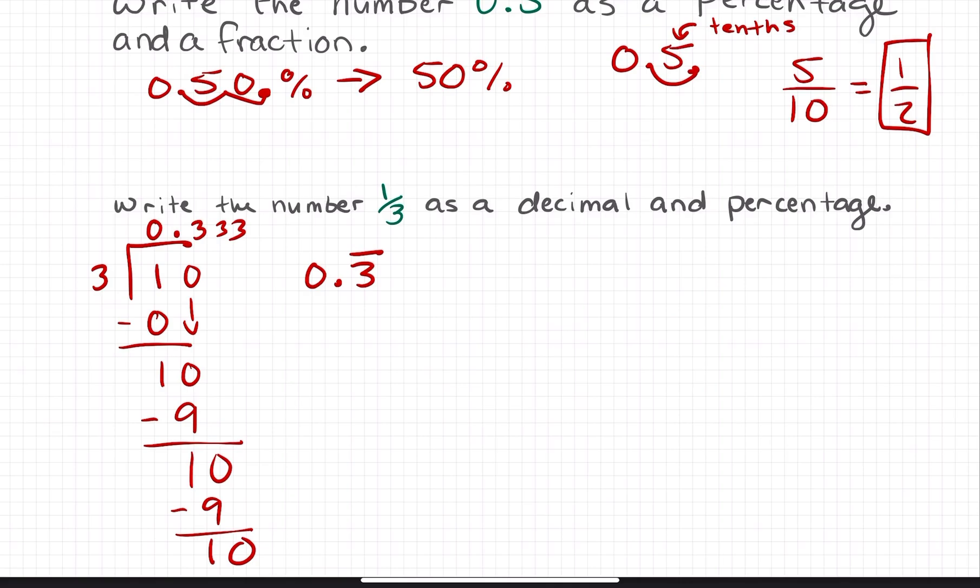How do I write this as a percentage? I need to move the decimal place over twice. I'll write out a couple of these threes: 0.333, and moving that decimal over twice puts it between the second and third three. I'll leave that third three to show it's repeating: 33.3 repeating percent.